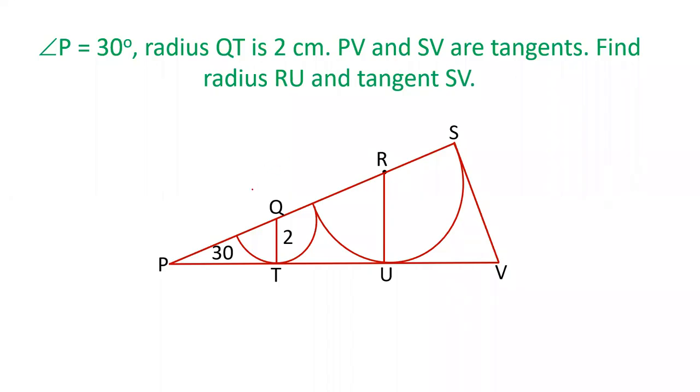Hello friends, welcome to our YouTube channel SSC Selector. In today's video, I will explain a question which is a bit difficult also. It is given that there are two semicircles inside a triangle. The angle P is 30 degrees.